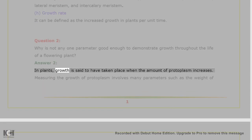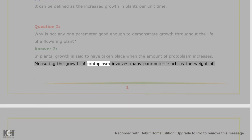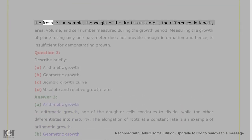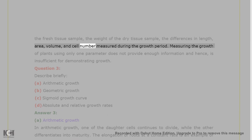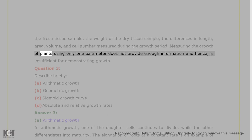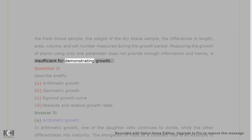Answer 2. In plants, growth is said to have taken place when the amount of protoplasm increases. Measuring the growth of protoplasm involves many parameters such as the weight of the dry tissue sample, the differences in length, area, volume, and cell number measured during the growth period. Measuring the growth of plants using only one parameter does not provide enough information and hence is insufficient for demonstrating growth.